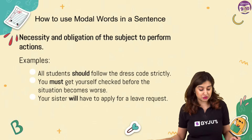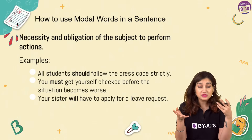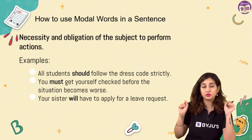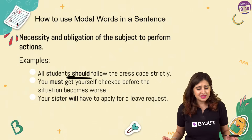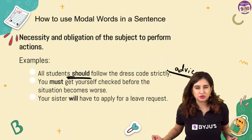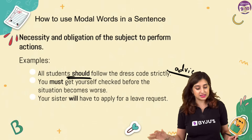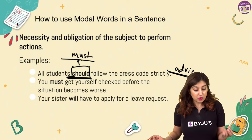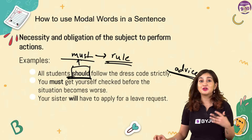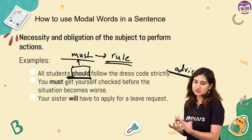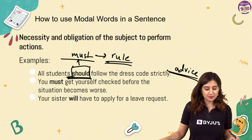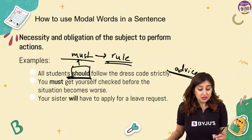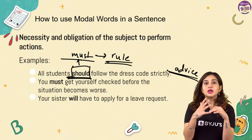For necessity and obligation, we generally use must or ought to. 'All students should follow the dress code strictly' can seem like general advice. If you want to express greater necessity, use must instead: 'All students must follow the dress code strictly' - this becomes a rule you are obligated to follow. Should is generally for advice or suggestions, but must is for rules and obligations. 'You must get yourself checked before the situation becomes worse' - this is a very strong suggestion bordering on necessity, perhaps a medical emergency.